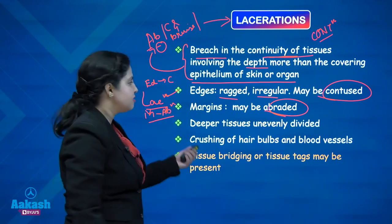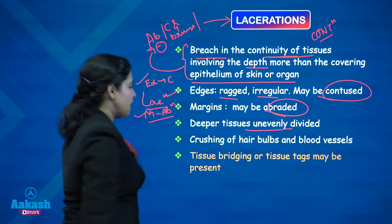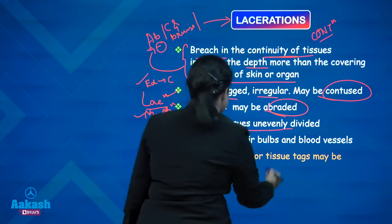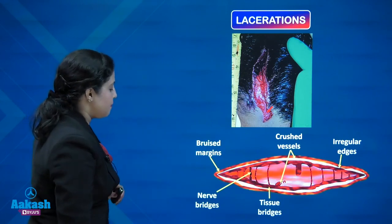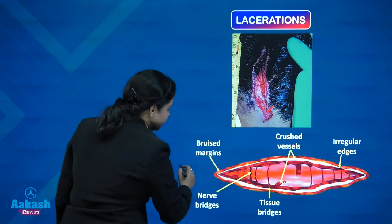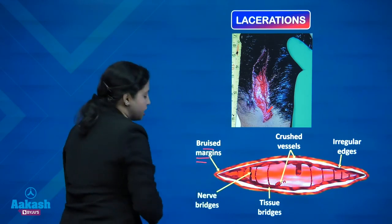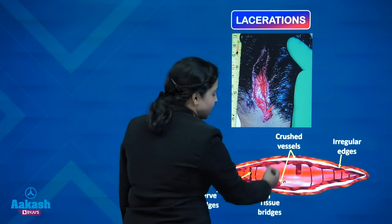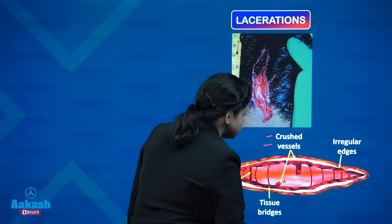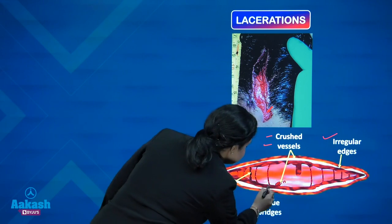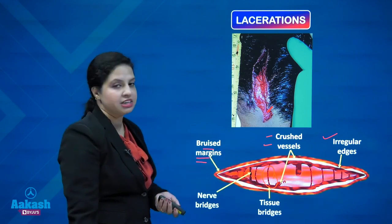From surgery, we know the difference between edges and margins. Deeper tissues are unevenly divided. There will be crushing of the hair bulbs and blood vessels, and tissue bridging or tissue tags may be present. This is an example of a lacerated wound with a diagrammatic representation showing bruised or contused margins, nerve bridges from uneven division of underlying vessels and nerves, crushed vessels, crushed hair bulbs, irregular edges, and tissue bridges. This is the characteristic picture of a lacerated wound.